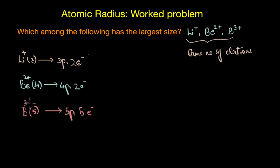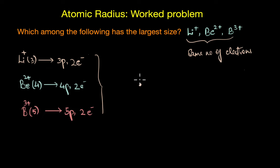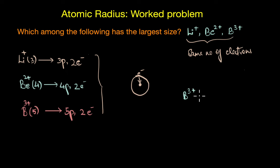B3+ has lost three electrons, so it also has just two electrons. Even though all three ions have the same number of electrons, they have different numbers of protons and therefore different nuclear charges. More protons means a stronger pull on the electrons, making the ion smaller. Since boron has the most protons, B3+ shrinks the most. Lithium has the fewest protons, so Li+ is the largest. The increasing order of size is: B3+ < Be2+ < Li+.